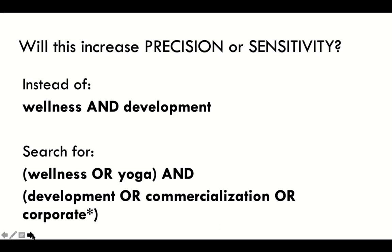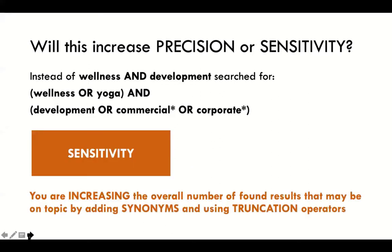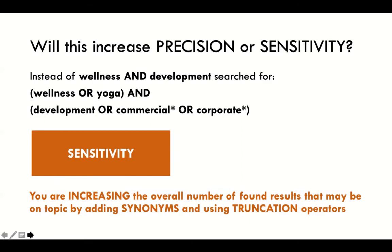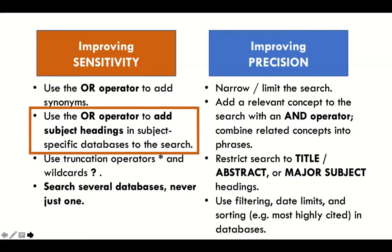This is really the core of what we want to do with knowledge synthesis searching. It increases sensitivity, because for each term we're adding synonyms. This is our first example, and it's the core of knowledge synthesis searching: you come up with as many synonyms as you can for every term, and then you combine the terms together. You always think of the fullest way of expressing the first concept, the fullest way of expressing the second concept, and then combine them in the end.